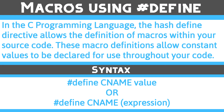In the C programming language, the hash-define directive allows the definition of macros within your source code. These macro definitions allow constant values to be declared for use throughout your code. Macro definitions are not variables and cannot be changed by your program code like variables. You generally use this syntax when creating constants that represent numbers, strings, or expressions.